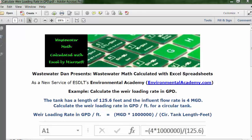This is a hydraulic loading problem where we'll calculate gallons per day per foot. We'll use a formula that takes the flow as MGD, converts it to GPD, then divides by the length of the circular tank to give us the hydraulic loading rate.